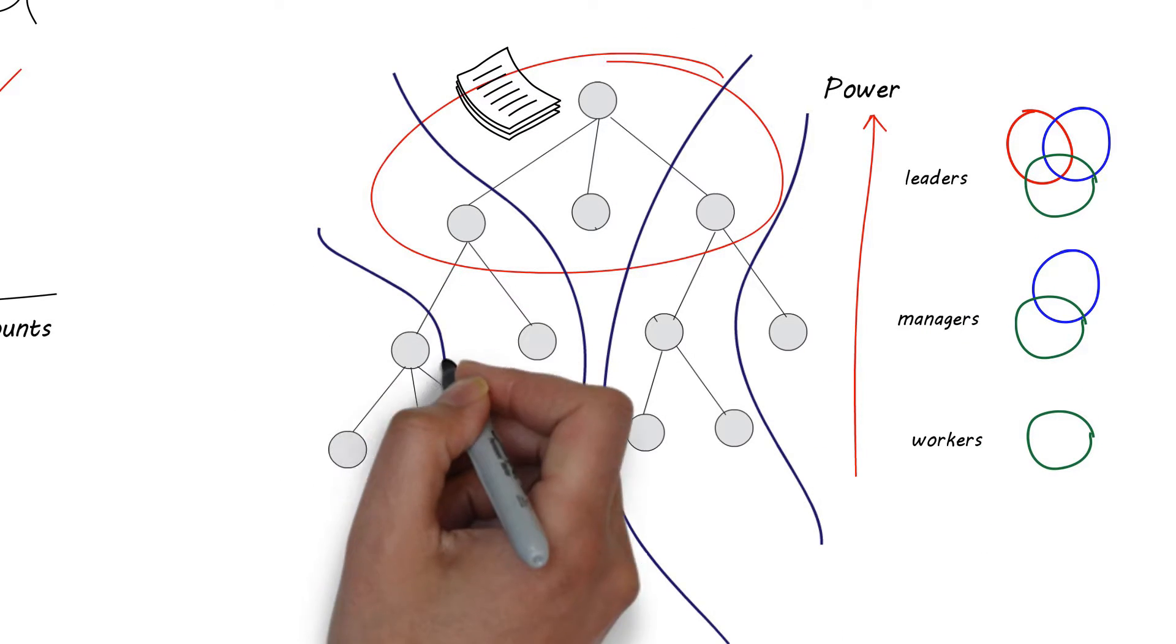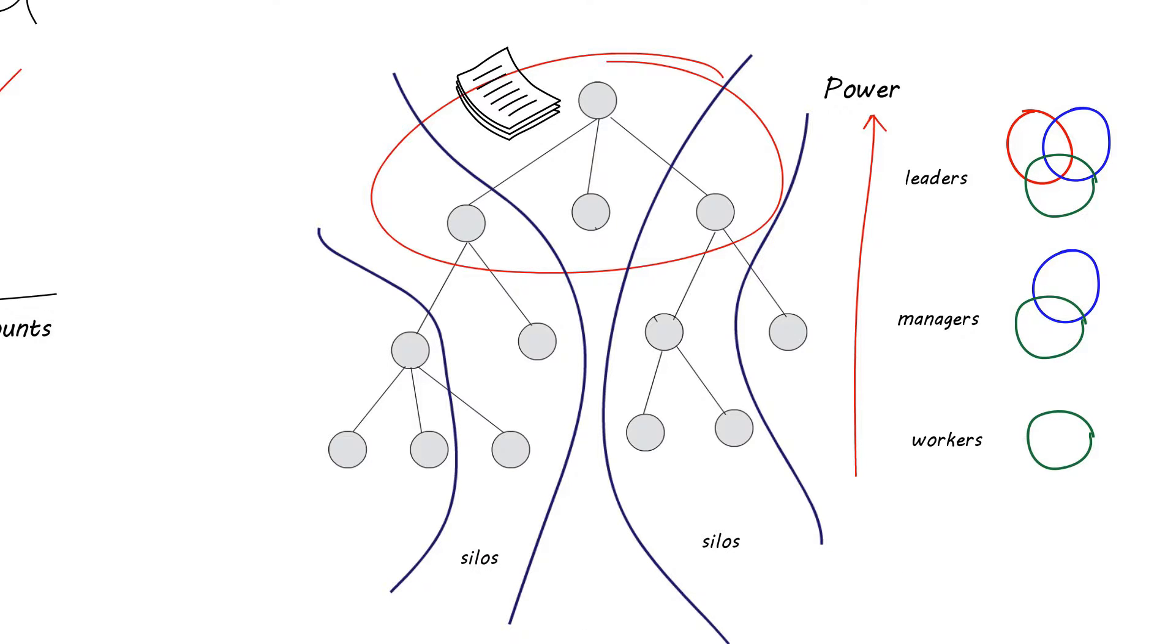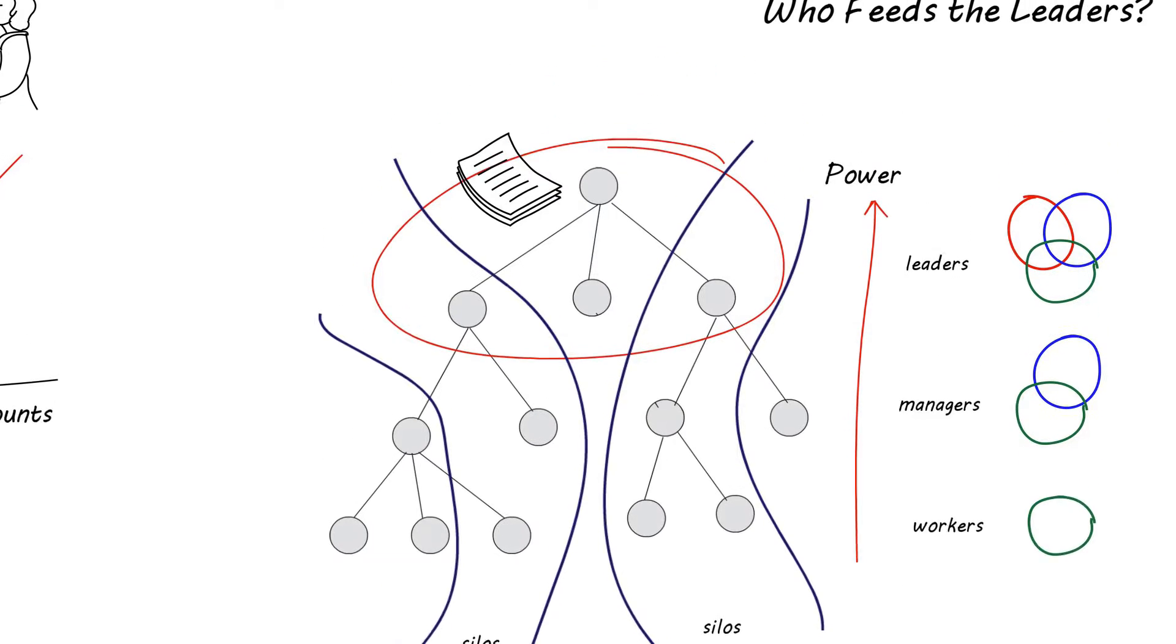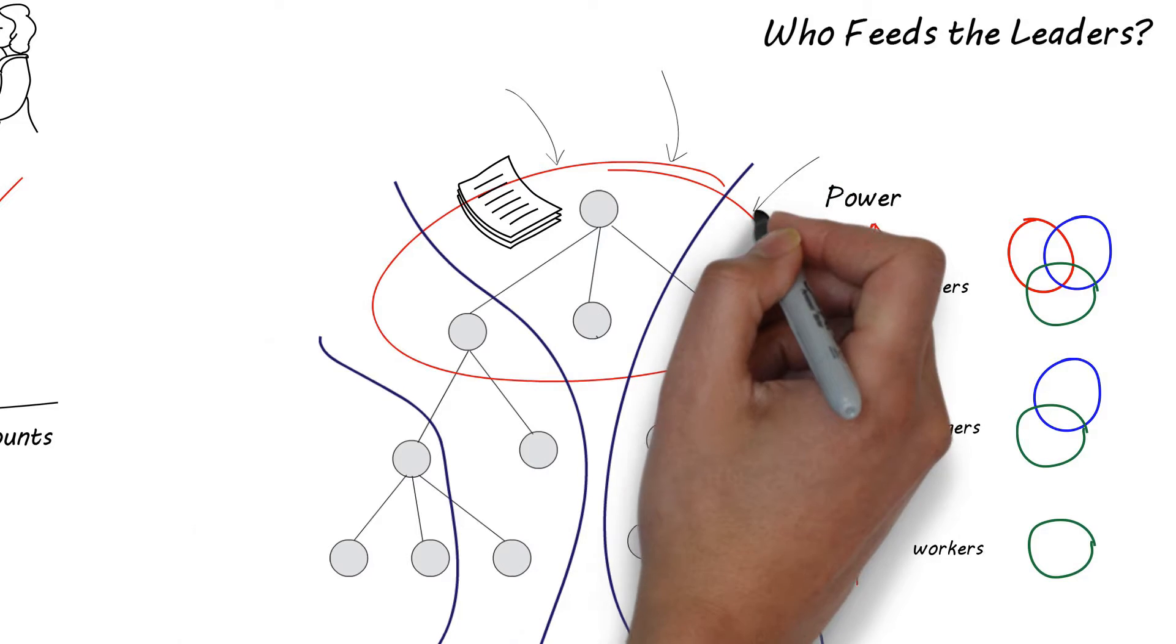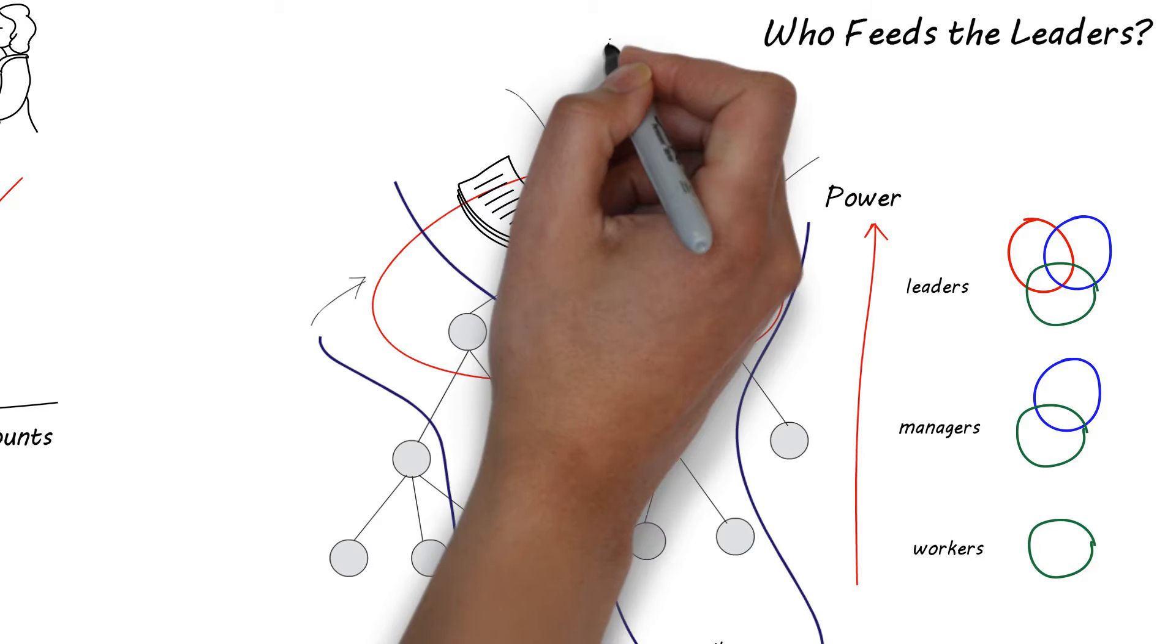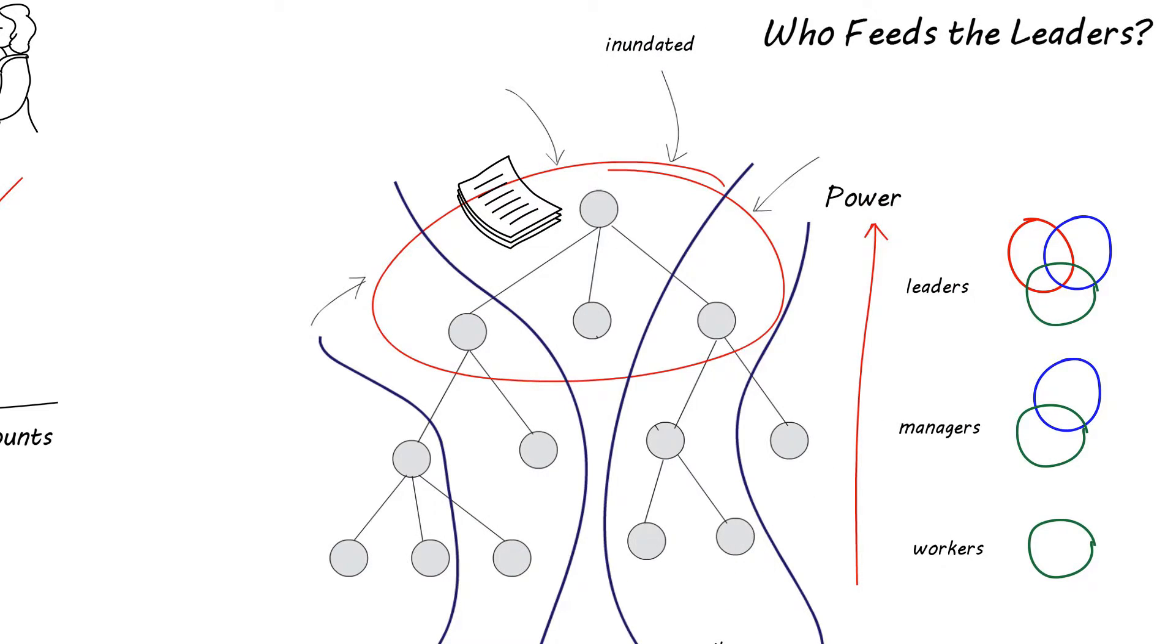The nature of the organization structure creates silos. When information flows up these silos, there is a perception that the leader will be inundated with information and therefore the data we provide to them should be dumbed down.